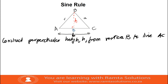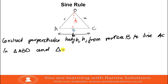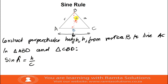Without any waste of time, let's now derive our sine rule. We will consider the two triangles — triangle ABD and triangle CBD. In triangle ABD, we can see that sine of angle A is equal to H over c, that is opposite over hypotenuse.